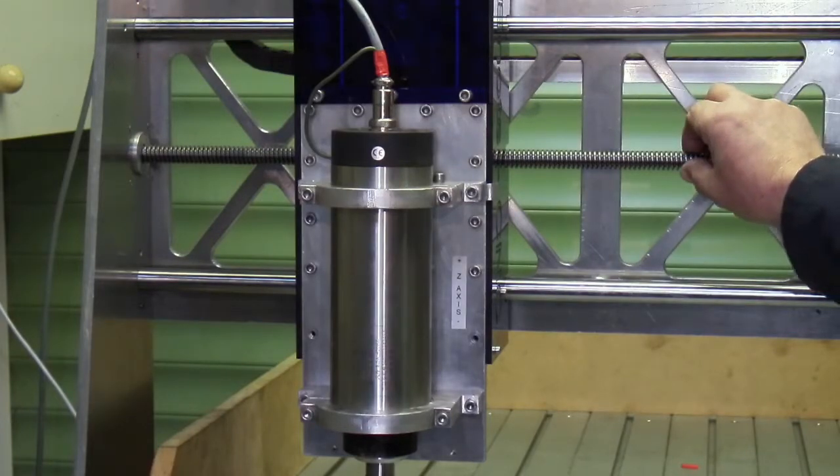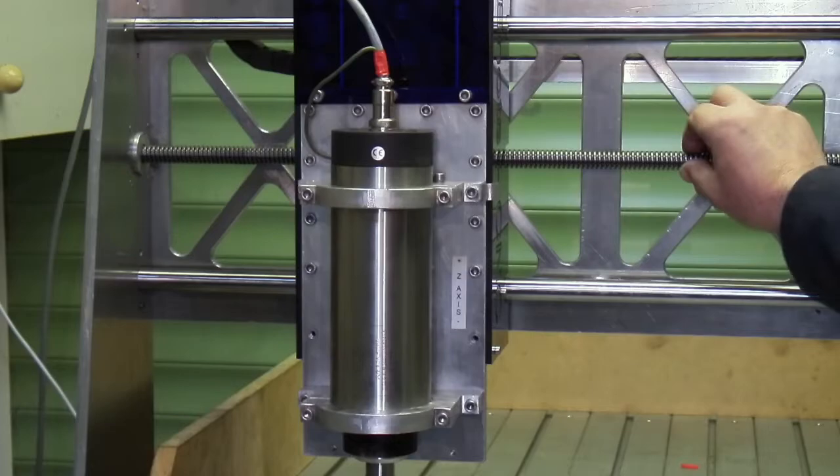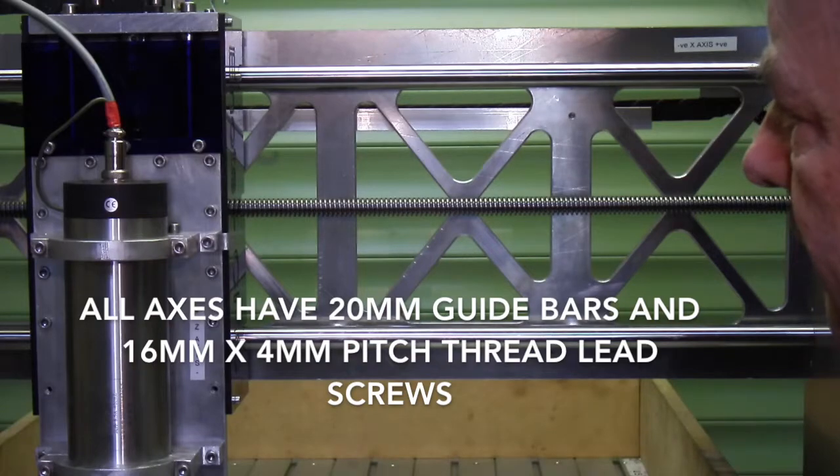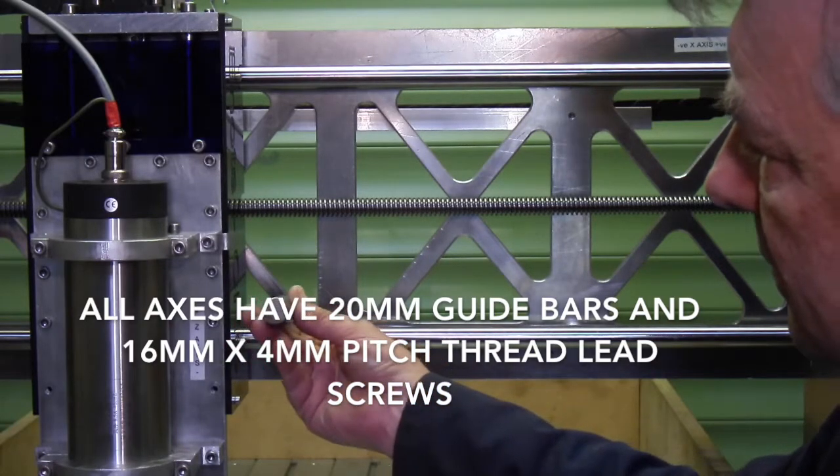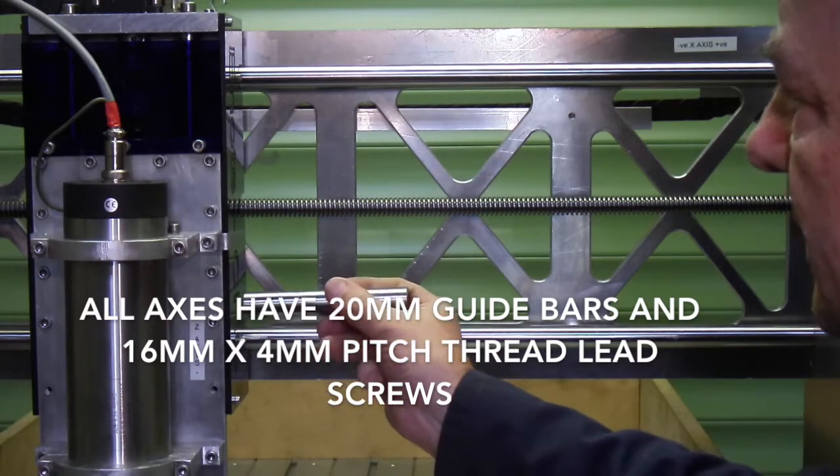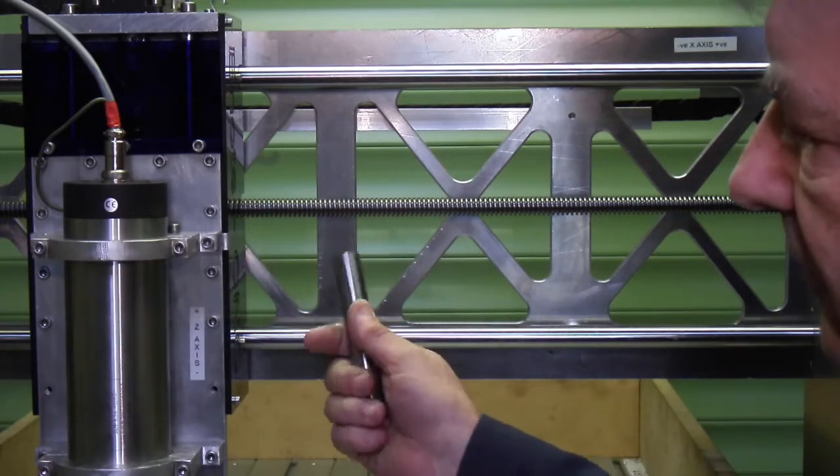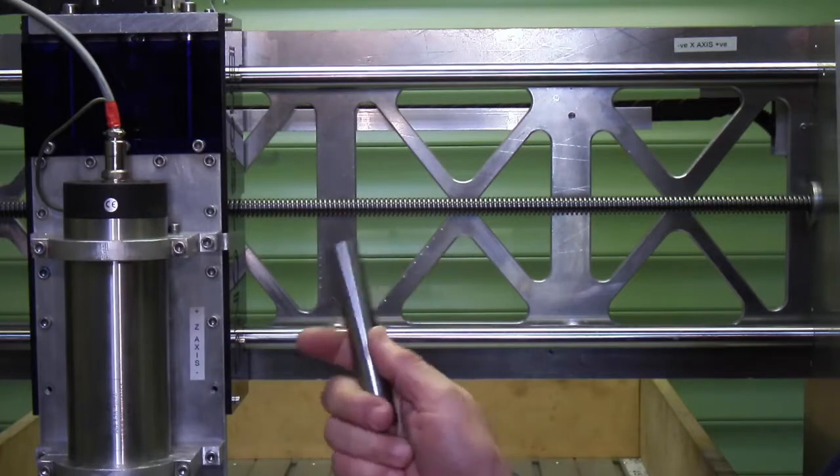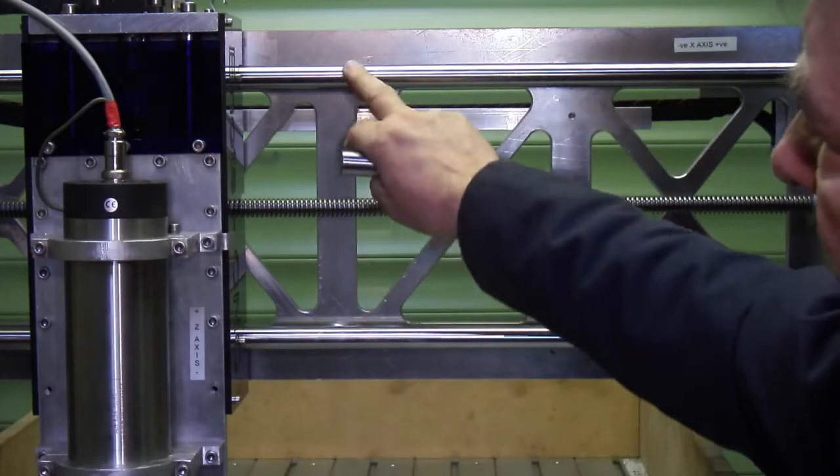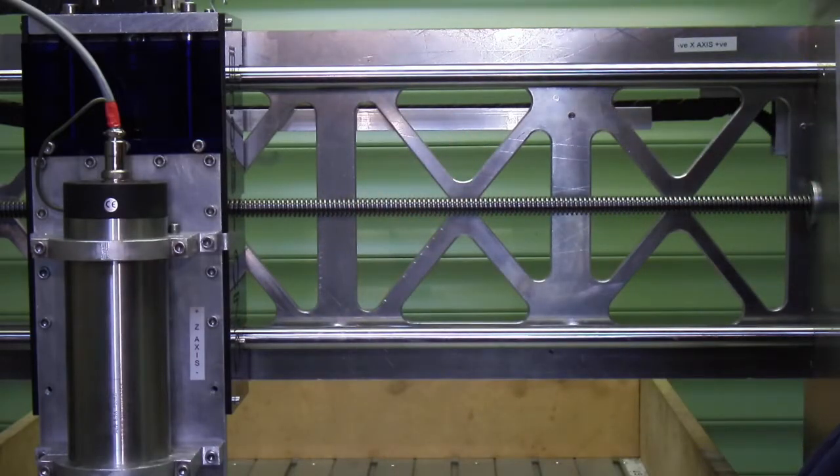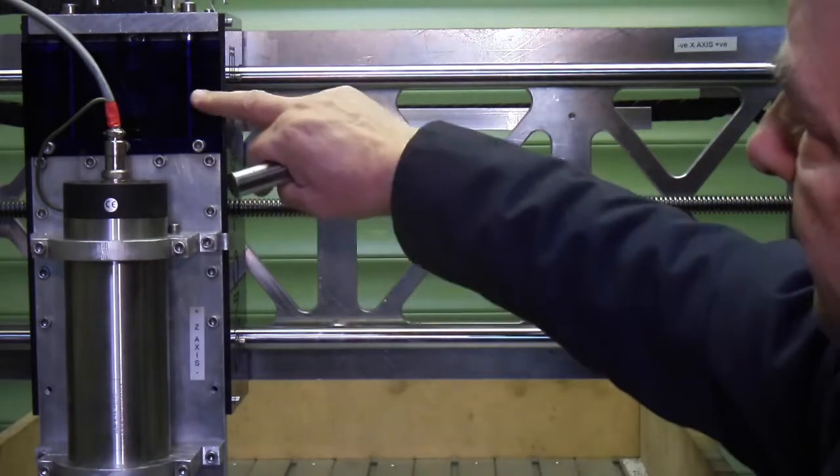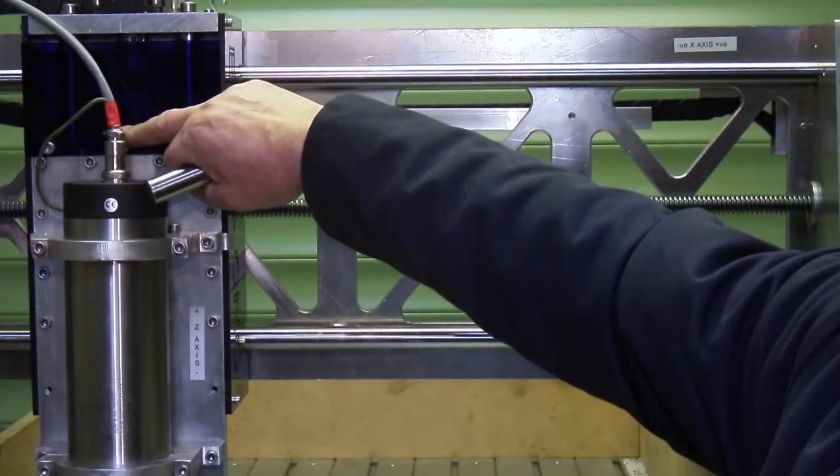The screws are 4mm pitch. So one turn will give me a 4mm movement. The guide rails are 20mm hardened steel bars which you can buy off the internet. When I first made it, I thought 20mm would be sufficient on both sides and on the head. But it wasn't, so on the Mark II I've actually updated the inside here to 20mm from 12mm.